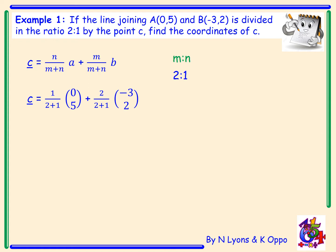We then have 1 over 2 plus 1 of A, and A was (0,5), plus 2 over 2 plus 1 of B, and B was (-3,2). Simplifying our fractions, we have 1/3 of A plus 2/3 of B. We then will multiply our fractions with our vectors. So 1/3 multiplied by 0 is 0, and 1/3 multiplied by 5 is 5/3.